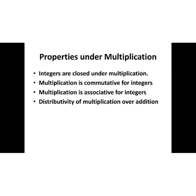Now let us study about the properties under multiplication. The properties are: first, closure property — integers are closed under multiplication; second, multiplication is commutative for integers; third, multiplication is associative for integers; and fourth, the distributive property — distributivity of multiplication over addition.